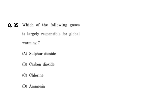The thirty-fifth question: which gas is largely responsible for global warming? Option A is sulfur dioxide, B is carbon dioxide, C is chlorine, D is ammonia. The greenhouse gases responsible for global warming are ozone, water vapor, methane, and carbon dioxide. Carbon dioxide is the main component. Sulfur dioxide, chlorine, and ammonia are not major contributors. So the correct answer is B — carbon dioxide, which is the major greenhouse gas.